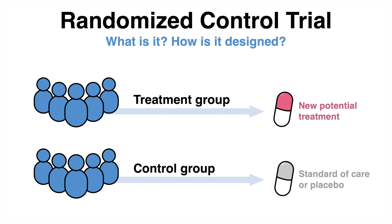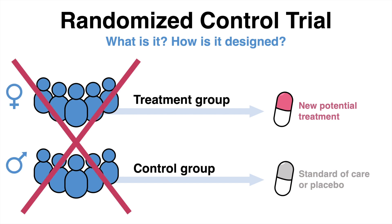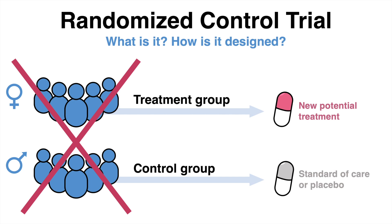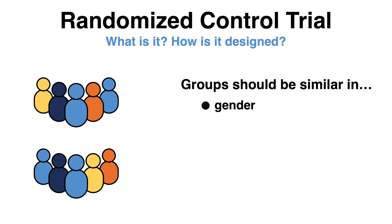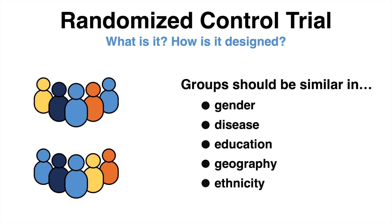For example, if the participants in one group were predominantly male and in the other female, it is highly likely that this would affect the two groups' characteristics irrespectively of the treatment. This does not only hold true for gender, but also other factors such as age, disease history, education, geography, and ethnicity should be equally represented in and well distributed among the two groups.